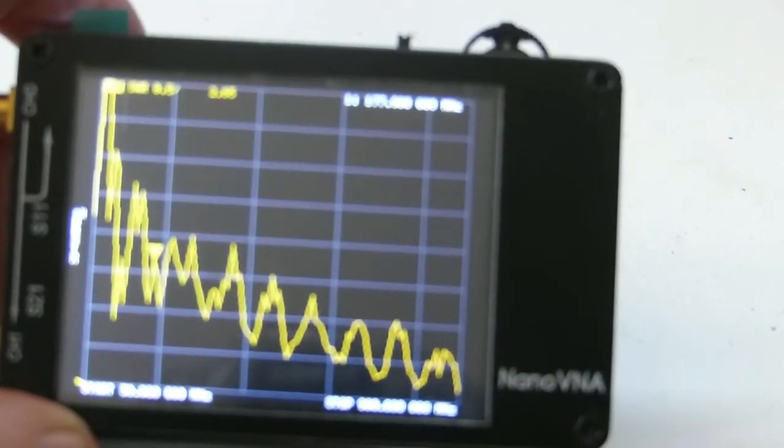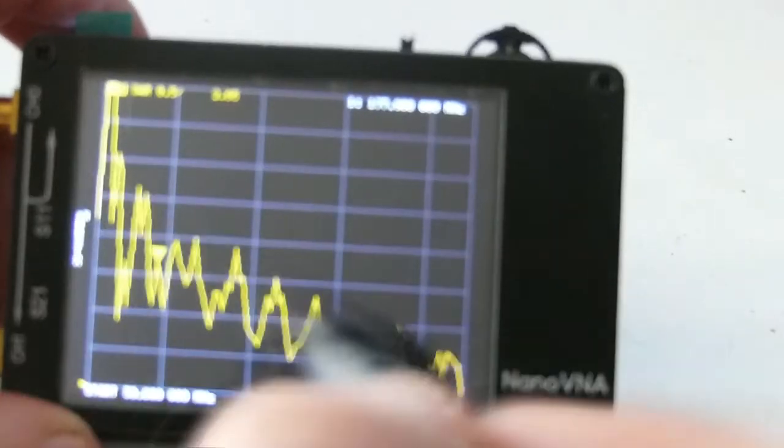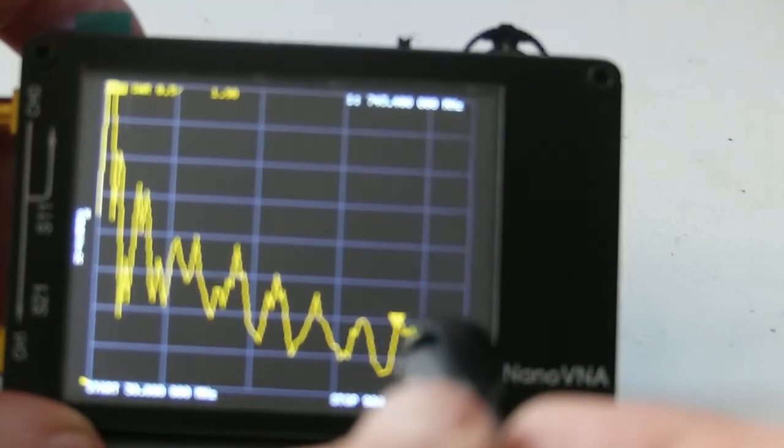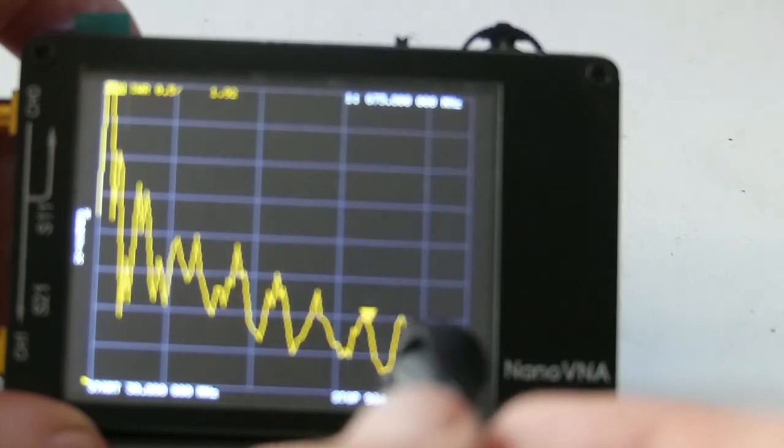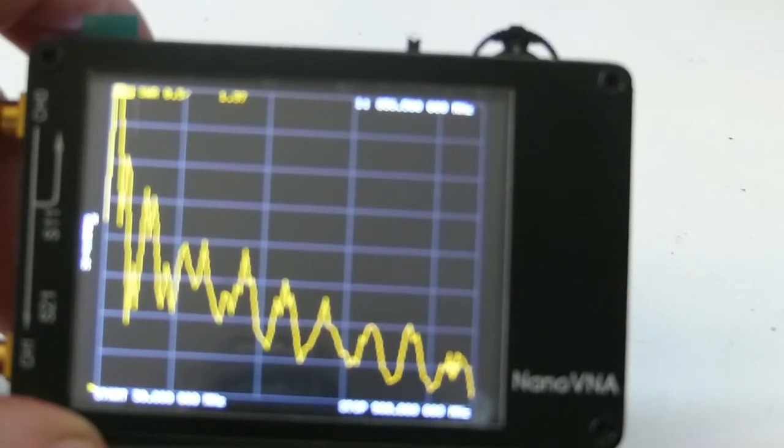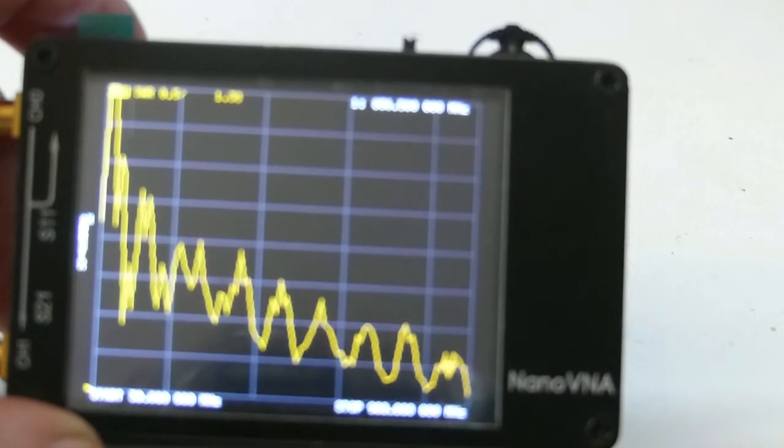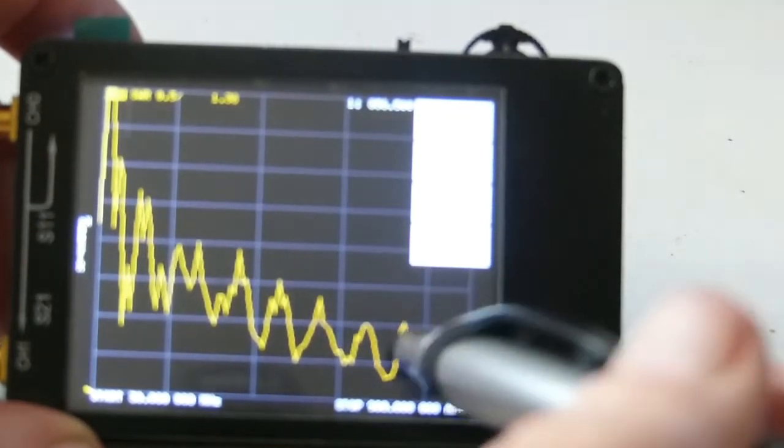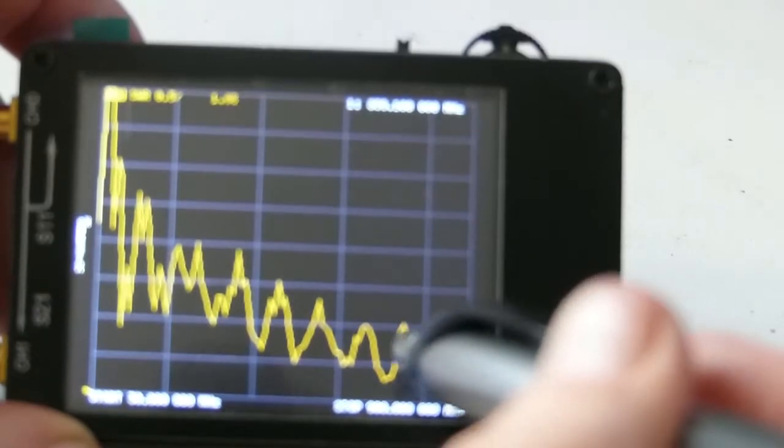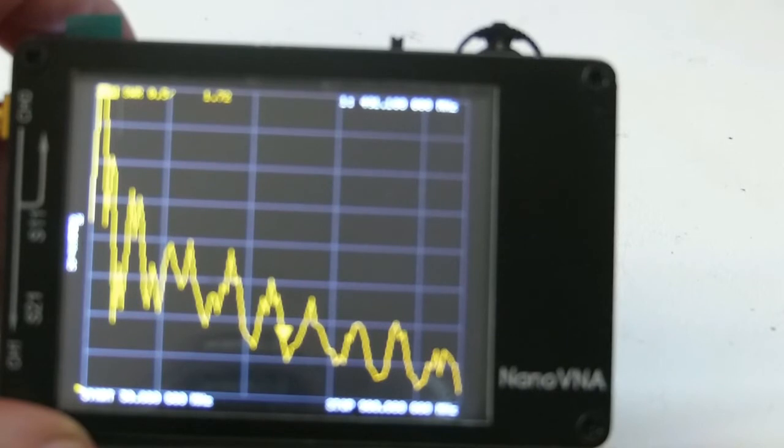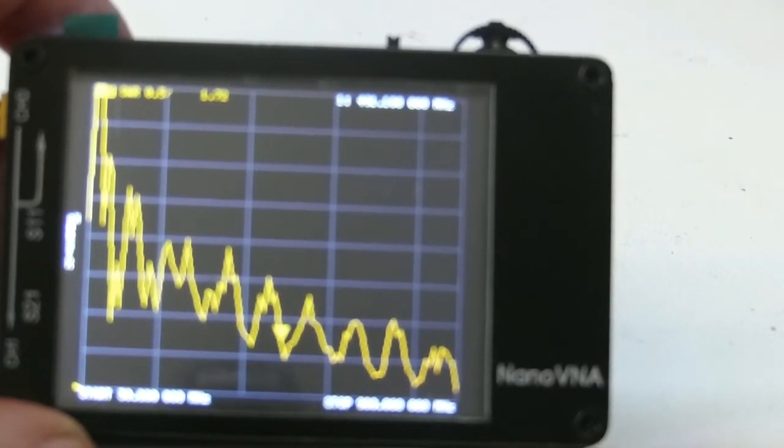It looks like it gets better as we go higher in frequency. Let's try to find another spot up near 900. At 856 megahertz, it looks like an SWR of 1.38. That's really not horrible. I don't know if I would want to transmit into it in various parts, but maybe it would be okay. At 490 it looks like 1.72.